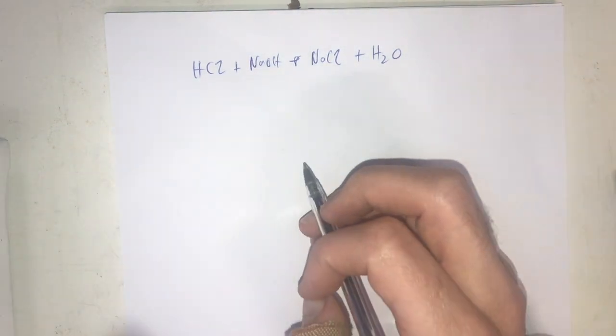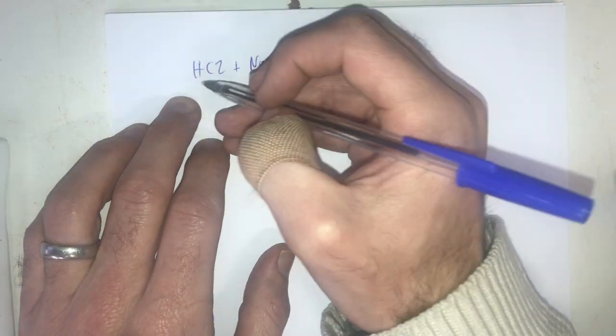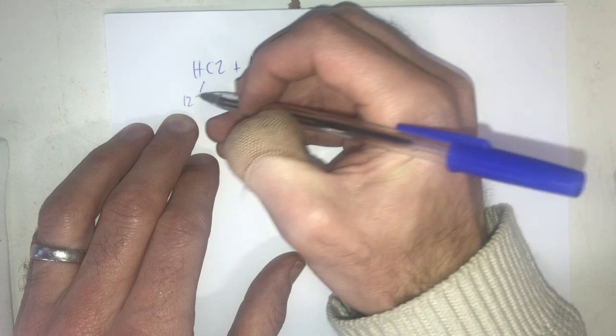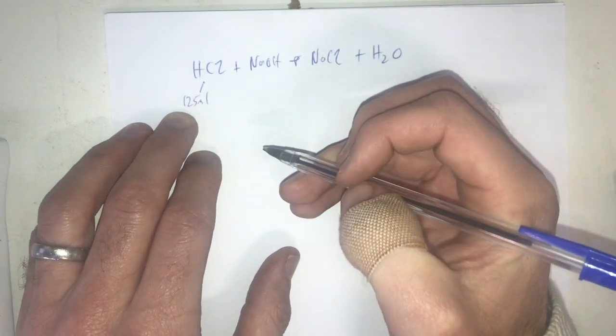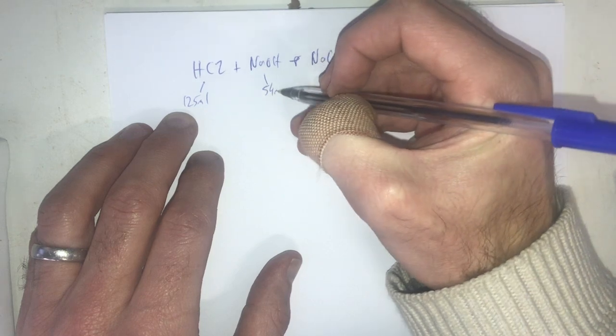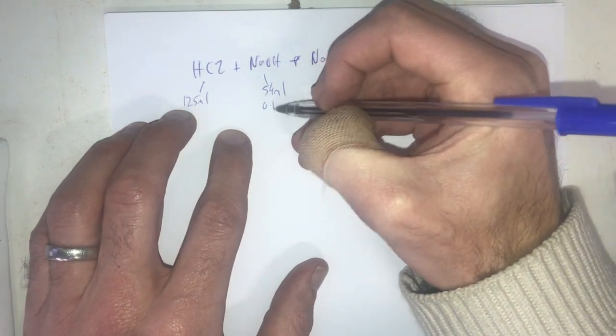That is already balanced so we don't need to worry about that but what we need to be aware of is what we're reacting. So we know that the hydrochloric acid is going to be 125 ml and we know that this one is 54 ml the sodium hydroxide and we know its concentration 0.1 molar.